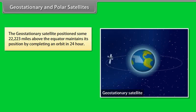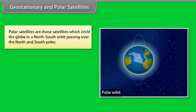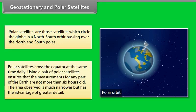Geostationary and polar satellites. The geostationary satellite positioned some 22,223 miles above the equator maintains its position by completing an orbit in 24 hour. The long range view of the same area helps meteorologists to monitor, analyze and predict weather patterns. However, in order to fully understand the earth's atmosphere, the entire planet must be monitored. Polar satellites are those satellites which circle the globe in a north south orbit passing over the north and south poles. Polar satellites cross the equator at the same time daily. Using a pair of polar satellites ensures that the measurements for any part of the earth are not more than six hours old. The area observed is much narrower but has the advantage of greater detail.